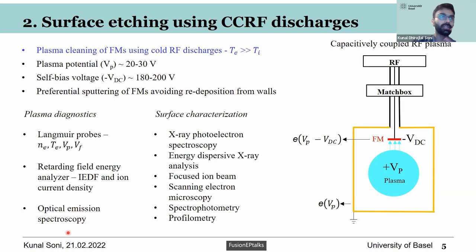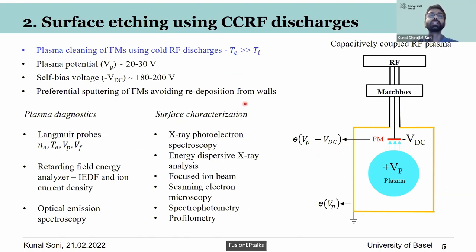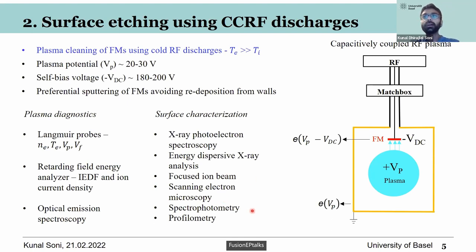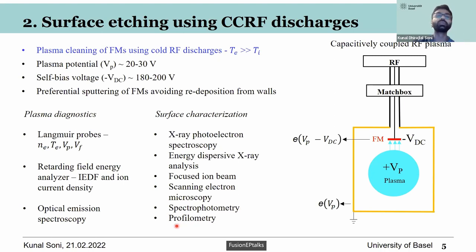In this work we perform plasma diagnostics using Langmuir probes to study plasma properties, a retarding field energy analyzer (RFEA) to study the ion energy distribution function and ion flux at powered and grounded surfaces, and optical emission spectroscopy to study the ion species in the plasma. We also conduct extensive surface studies, characterizing mirror surfaces using XPS (X-ray photoelectron spectroscopy), EDX analysis, and focused ion beam scanning electron microscopy. We do spectrophotometry to study mirror reflectivity, and profilometry to study surface topography and roughness.